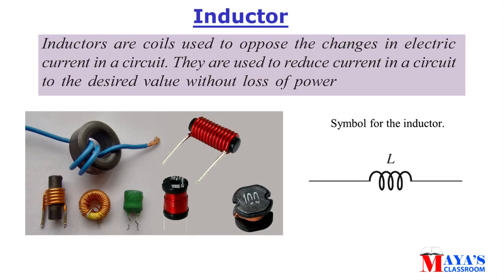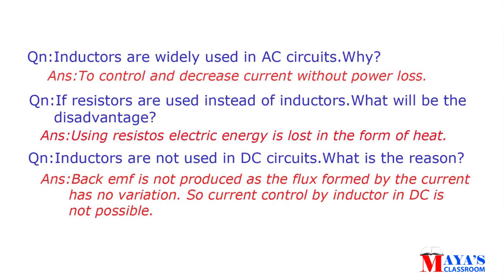Inductors are coils used to oppose changes in electric current in a circuit. They are used to reduce current to a desired value without loss of power. Inductors are widely used in AC circuits to control and decrease current without power loss. If resistors are used instead of inductors, electric energy is lost in the form of heat. Inductors are not used in DC circuits because back EMF is not produced — the flux formed by a constant DC current has no variation, so current control by an inductor in DC is not possible.